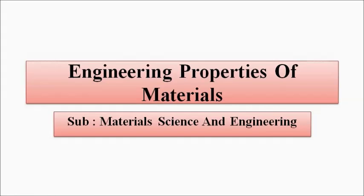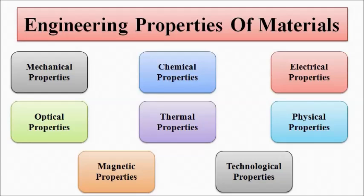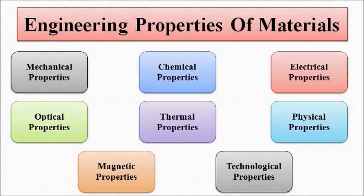The various properties of engineering materials that are considered are: mechanical properties, chemical properties, electrical properties, optical properties, thermal properties, physical properties, magnetic properties, and technological properties.